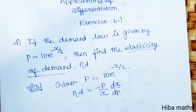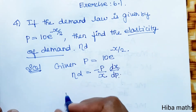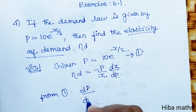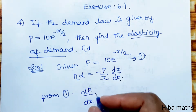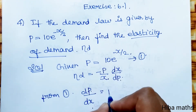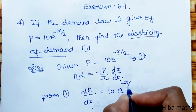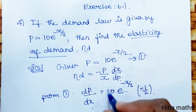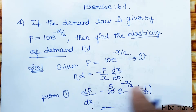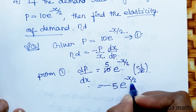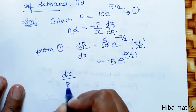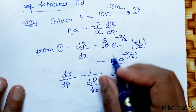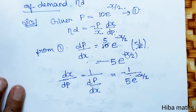Now we need dx/dp, so we first differentiate p with respect to x. Differentiating e^(−x/2) gives e^(−x/2)·(−1/2), and since 10 is constant, dp/dx = 10·(−1/2)·e^(−x/2) = −5·e^(−x/2). Therefore dx/dp = −1/(5·e^(−x/2)).